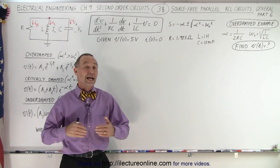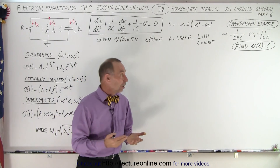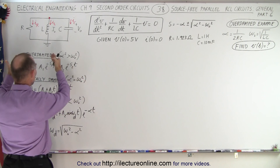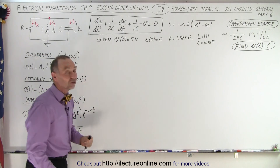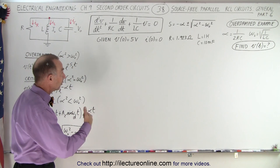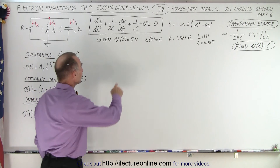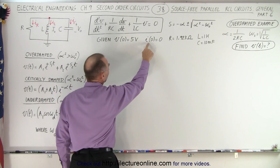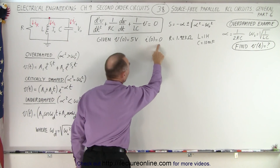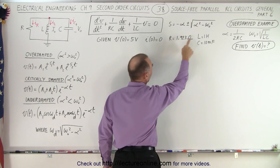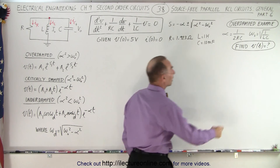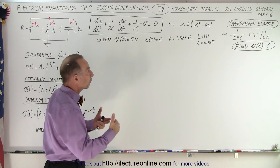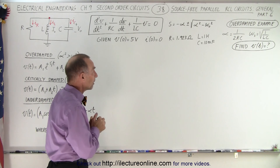Welcome to our lecture online. Now we can work out an example of how to find the actual equation of an overdamped case when we're given some initial conditions and we know the values for the resistance, the inductor, and the capacitor. We're given that the initial voltage when time equals zero is five volts — that's the voltage across the capacitor. We're given that the current through the inductor at t equals zero is equal to zero, along with the values for resistance, inductance, and capacitance. We're trying to find the voltage as a function of time for an overdamped example.